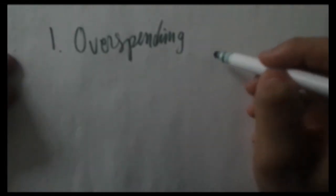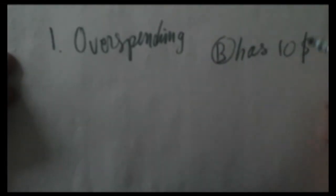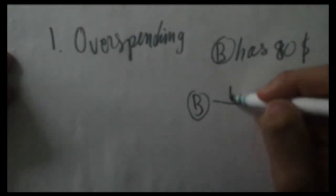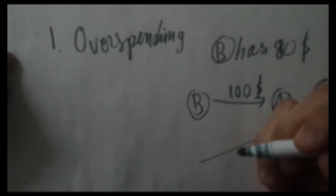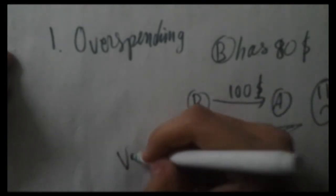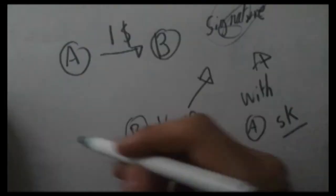The first flaw that appears is that someone can just overspend. What if someone decides to write that he's giving you $100 while only having $80? Now, I will not go in details about encryption algorithms,